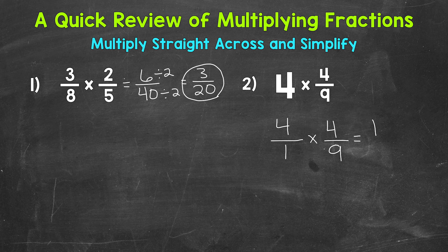4 times 4 is 16. 1 times 9 is 9. So, we get 16 ninths. And that's our answer, but it's in the form of an improper fraction. So, we want to convert this to a mixed number. And we do that by dividing our numerator, the top number, by the denominator, the bottom number.